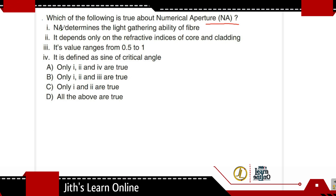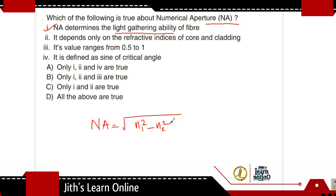The first statement is: Numerical aperture determines the light-gathering ability of the fiber. This is actually the definition of numerical aperture — the light-gathering ability. The second statement is: It depends only on the refractive indices of the core and cladding.